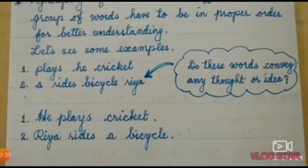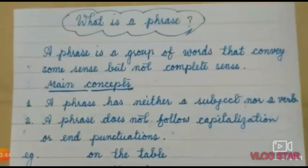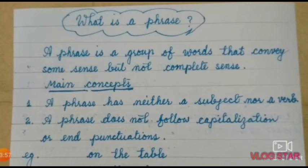Now we will learn about phrase and its main concepts. Ab hum phrase aur uske concepts ke baare mein padhenge. Phrase ka matlab hai vakyaansh. A phrase is a group of words that conveys some sense but not complete sense. Phrase bhi shabdhon ka samooh hai jiska thoda bahut arth nikalta hai, lekin poorna arth nahi.